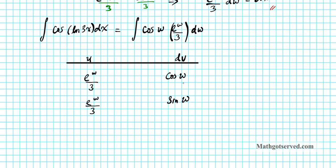We keep integrating until we end up with a cosine function. If you integrate sine W, you end up with cosine W. Is it negative or positive? If you differentiate cosine, the sign does change because the derivative of cosine is negative sine. So we put a minus here to compensate for that sign change. If you integrate E to the W over 3, you still get E to the W over 3. We stop here because we now have a complete cycle — we're back to cosine.